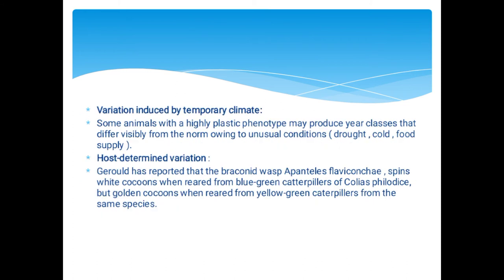Variation induced by temporary climate: animals with a highly plastic phenotype may produce severe classes that differ visibly from the norm due to unusual conditions such as drought or cold food supply. For host-determined variation, Geralt reported that the braconid wasp Apanteles flaviconca spins white cocoons when reared from blue-green caterpillars of Colias philodice, but golden cocoons when reared from yellow-green caterpillars of the same species — meaning if the host changes, the species appearance also changes.